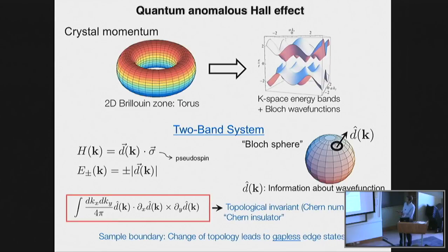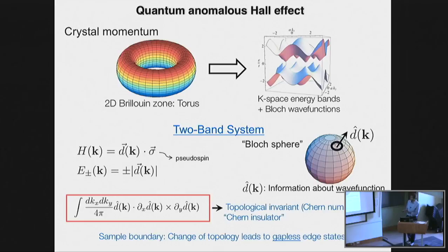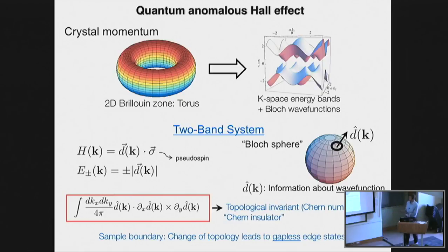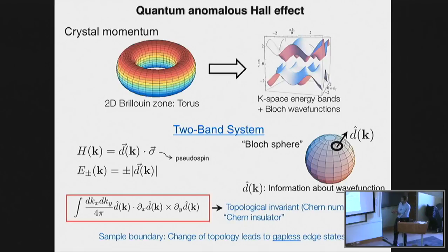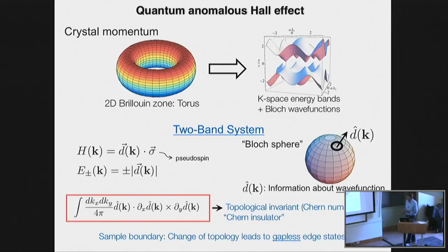At every point in momentum space, one defines energy bands. In the simplest case, we just have two energy bands. The system is defined by the energy dispersion of these bands as well as knowledge about their wave functions. This simple two-band Hamiltonian looks like a fictitious spin in a magnetic field in momentum space. The non-trivial band topology is contained in the direction of this magnetic field in momentum space — if there are certain non-trivial textures of this magnetic field, it leads to topological invariants.